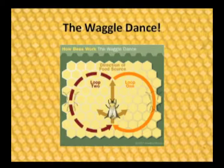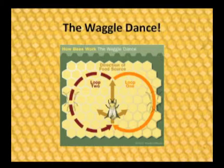As you can see in the diagram, they move in the direction of the food source through loops, and that can tell the rest of their colony exactly where they have been and where there's a good food source.